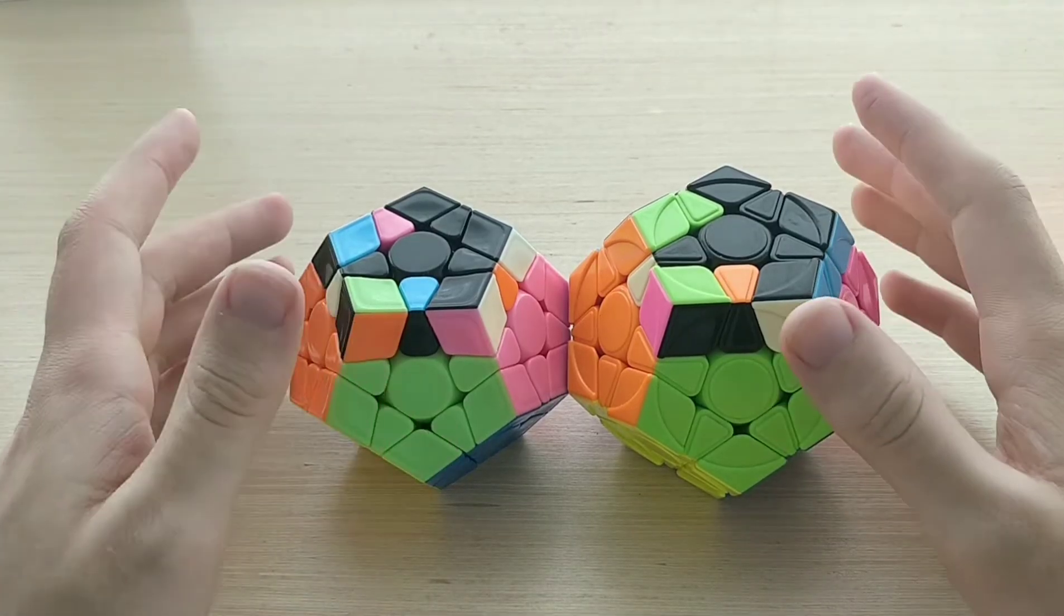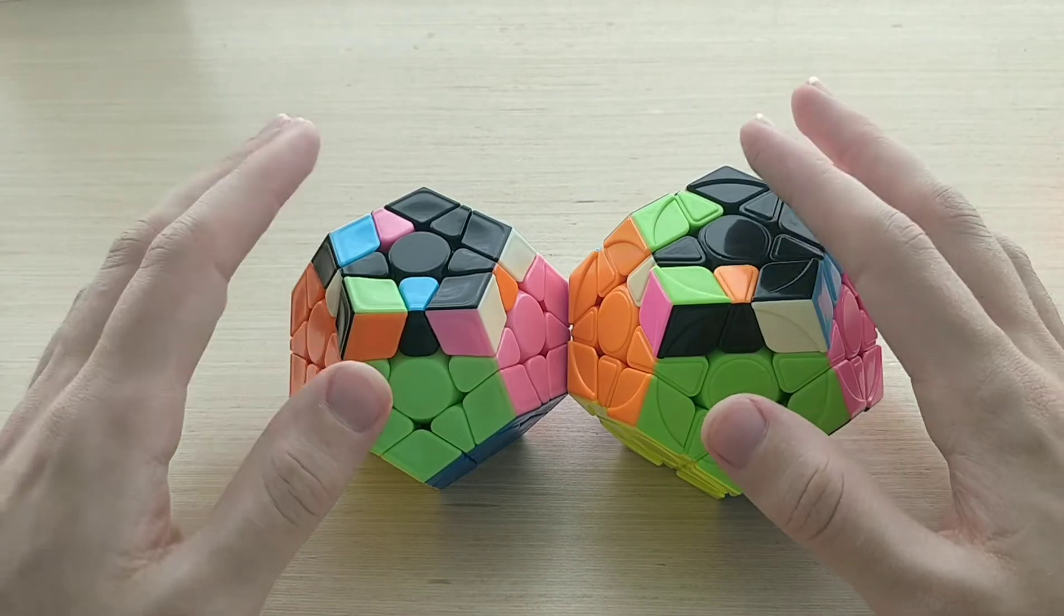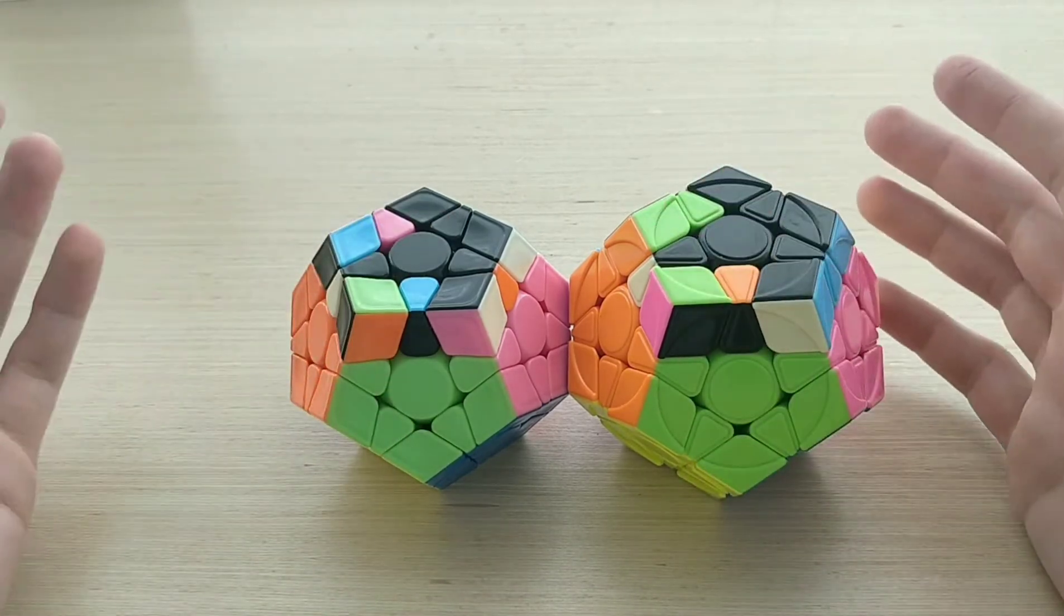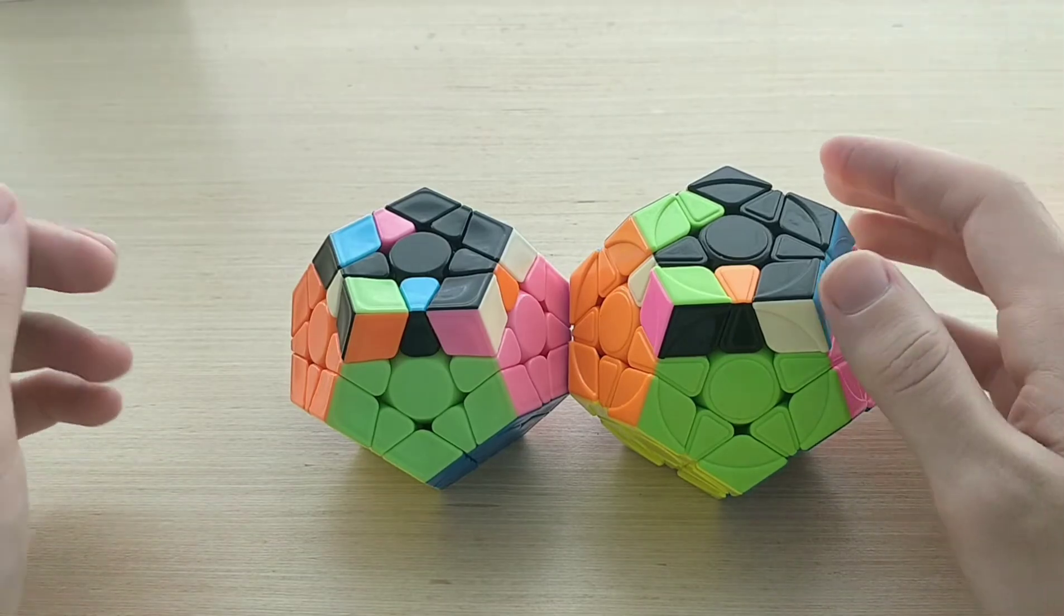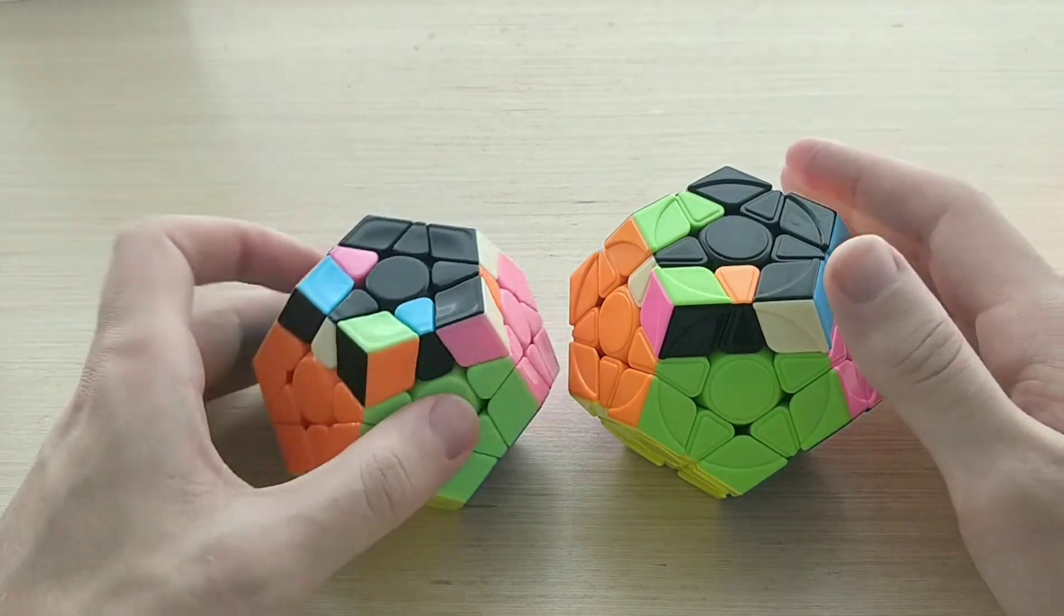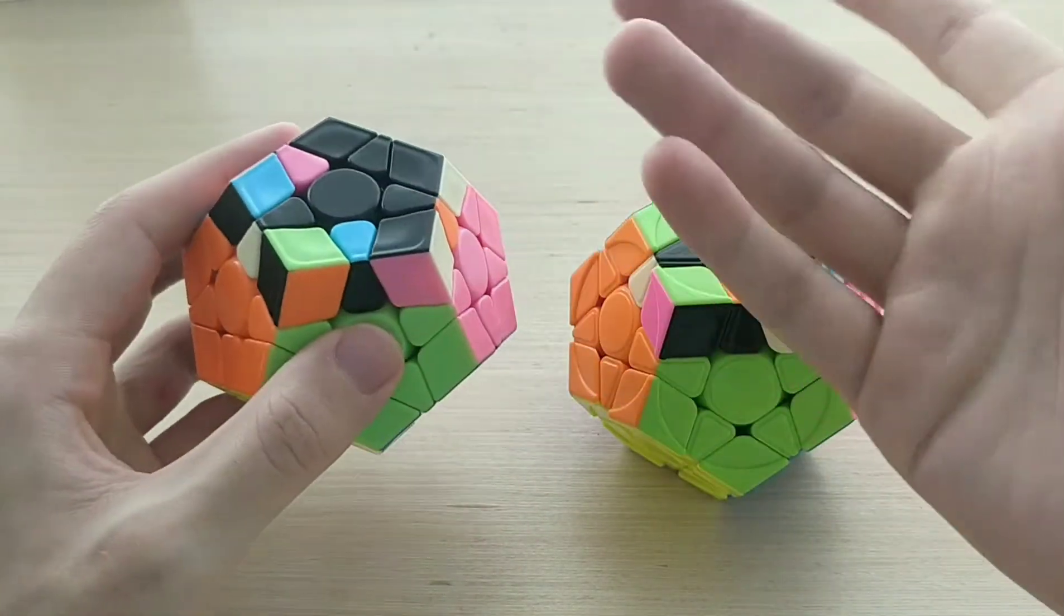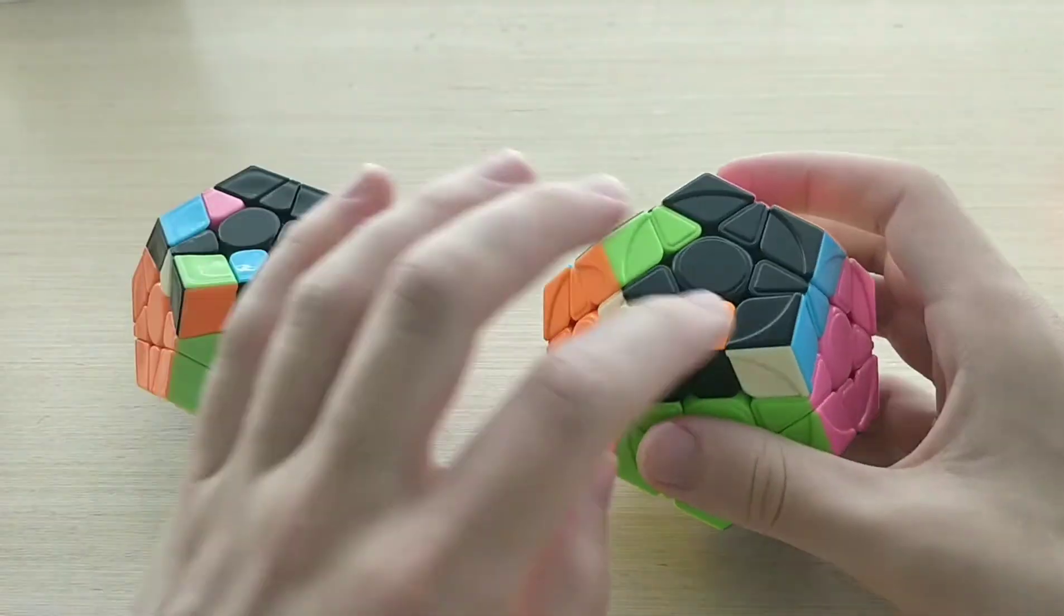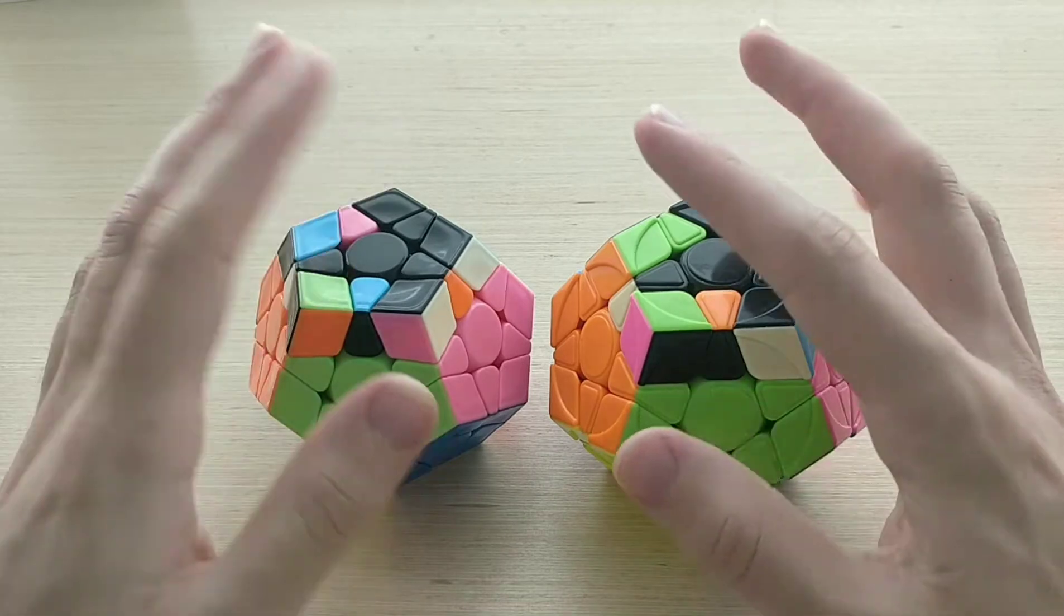And finally we have set 6. Unlike the other sets, this isn't really equivalent to any 3x3 OLL set, but it's just super easy recognition and super easy algs, so we're chucking it in here. So recognition, very straightforward, it's just, you see this top pattern that tells you it's set 6, and then if it has no bars, that's 6a, if it has bars, that's 6b. So simple.